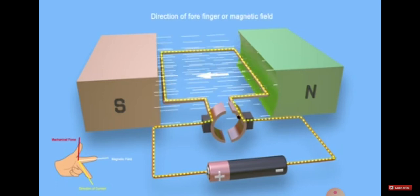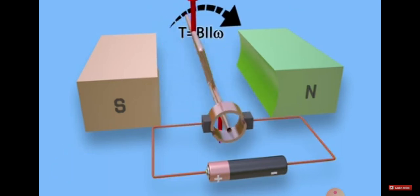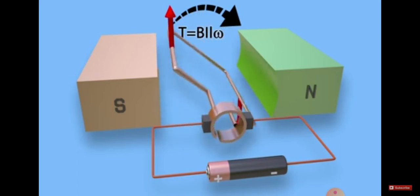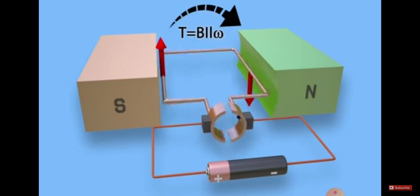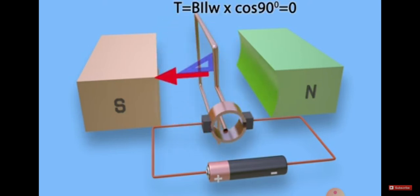The middle finger gives the direction of current, the thumb finger gives the direction of mechanical force, and the index finger gives the direction of the magnetic field. This is how Fleming's Left Hand Rule works — the three sides represent magnetic field, current, and mechanical force, leading to the rotation of the motor.